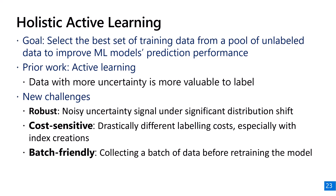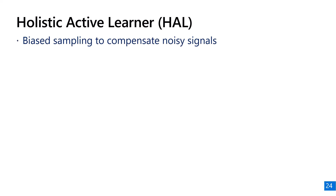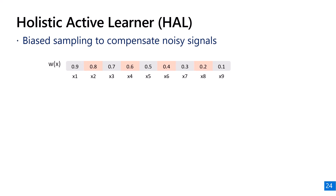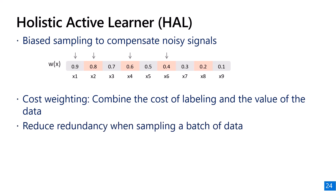To address these challenges, we propose the holistic active learner. At a high level, our technique uses biased sampling instead of deterministic sampling to avoid relying entirely on noisy signals. We also weigh the value of data by combining the cost of acquiring the label and the utility of the data for the machine learning model. Finally, we reduce redundancy when sampling a batch by clustering similar data points and avoiding sampling too many from the same cluster in each batch.